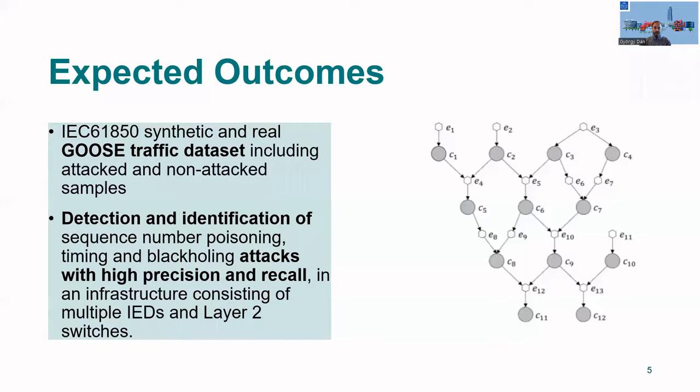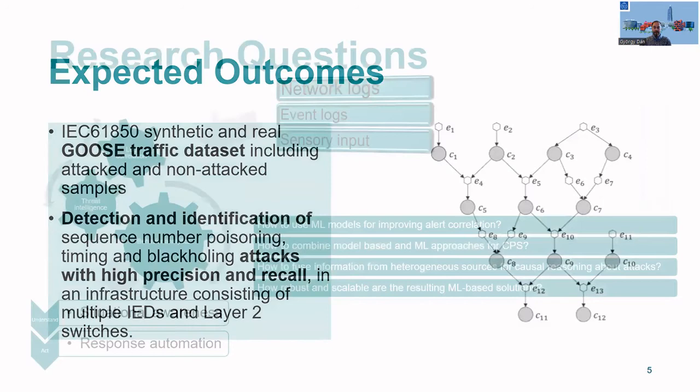The expected outcomes of the project are, on the one hand, a data set of substation automation traffic focusing on GOOSE that includes attacked and non-attacked samples, and algorithms and methods for the detection and identification of different attacks against GOOSE traffic in an infrastructure that consists of multiple intelligent electronic devices and layer 2 switches.